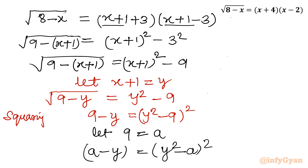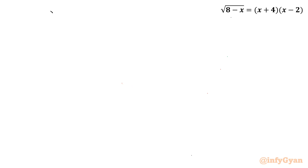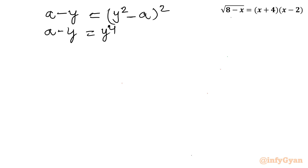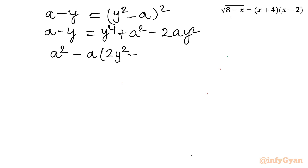Expanding the right hand side using (a minus b) squared: a minus y equals y to the power 4 plus a squared minus 2ay squared. Taking all terms to the RHS and rearranging as a quadratic in a: a squared minus a times (2y squared plus 1) plus (y plus y to the power 4) equals 0.